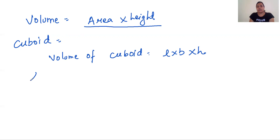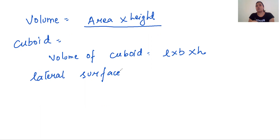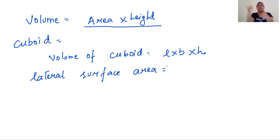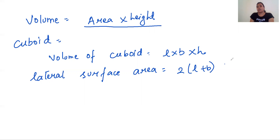Now, lateral surface area is the area of the four walls, or the area around the surroundings — we do not include the base and the top. So lateral surface area of a cuboid means the area of the four walls. Think of a room: the four walls standing upright. Lateral surface area equals the perimeter of the base shape × height. The perimeter of a rectangle is 2(L + B), multiplied by height H. So lateral surface area of a cuboid = 2(L + B)H.